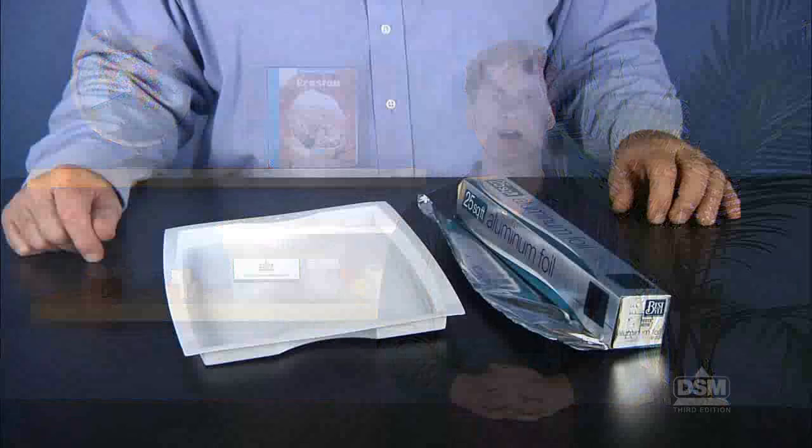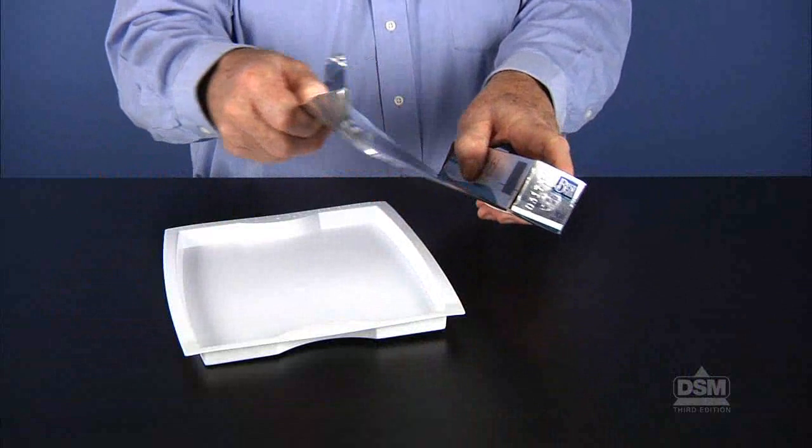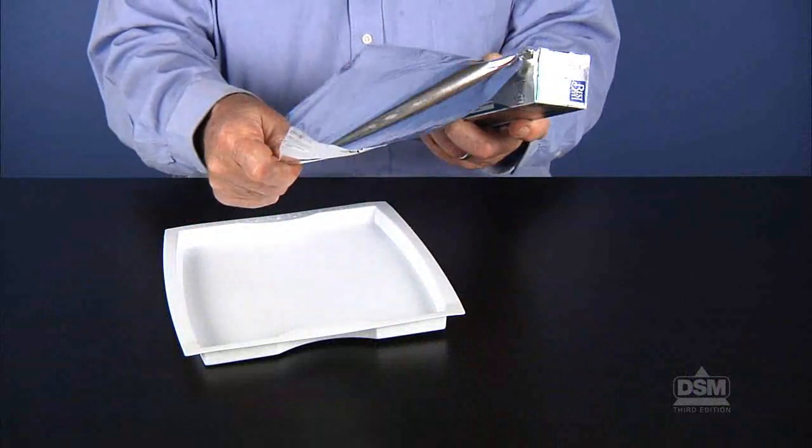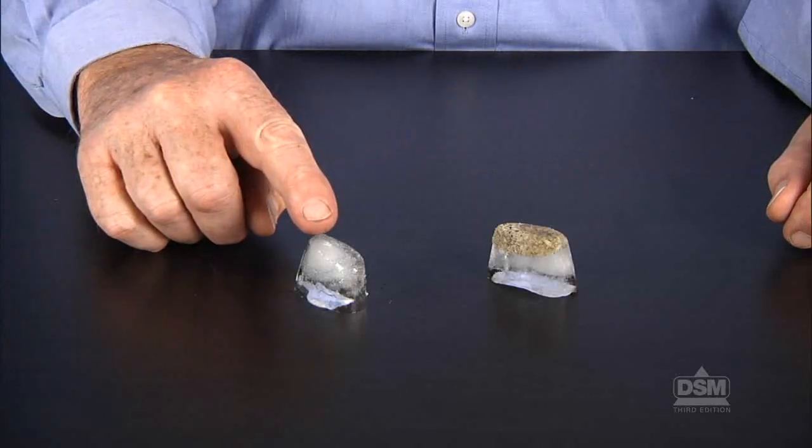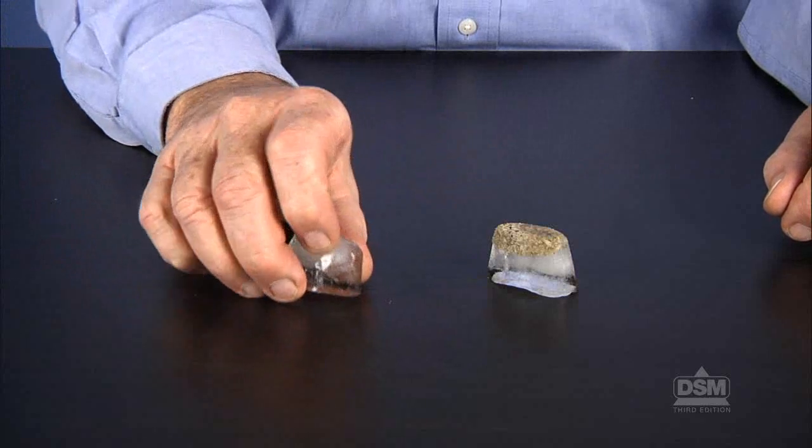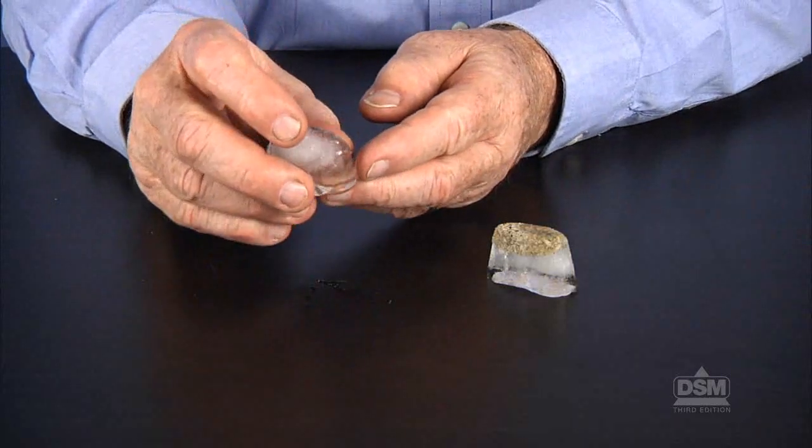For each team, tear off one piece of aluminum foil large enough to cover the bottom of their plastic tray. Make two ice cubes for each team, one with plain tap water and the other with tap water containing gravel and sand.